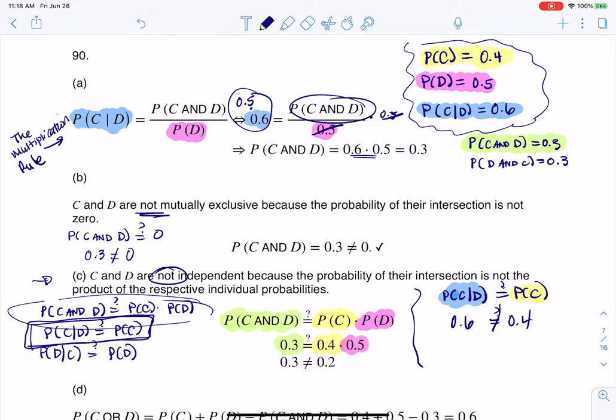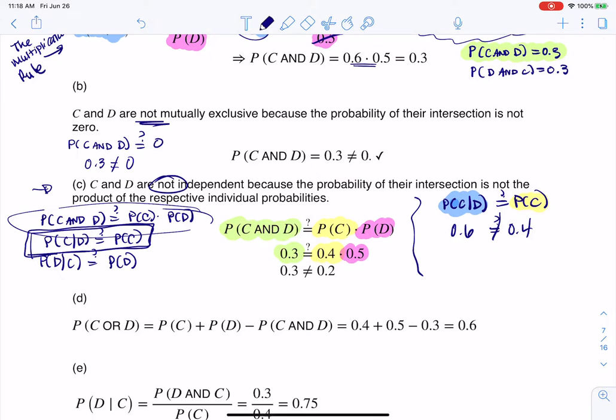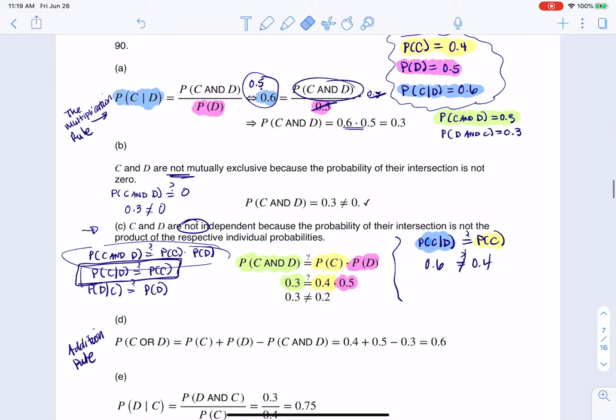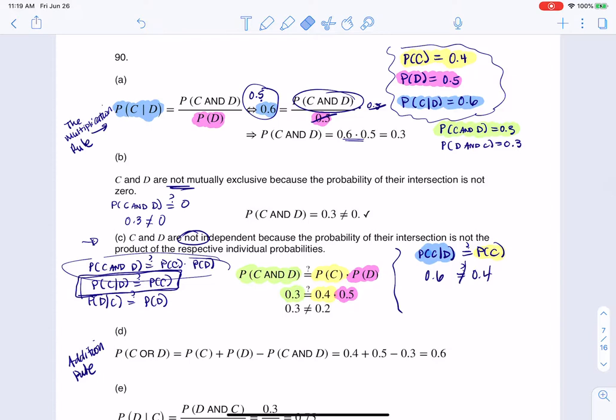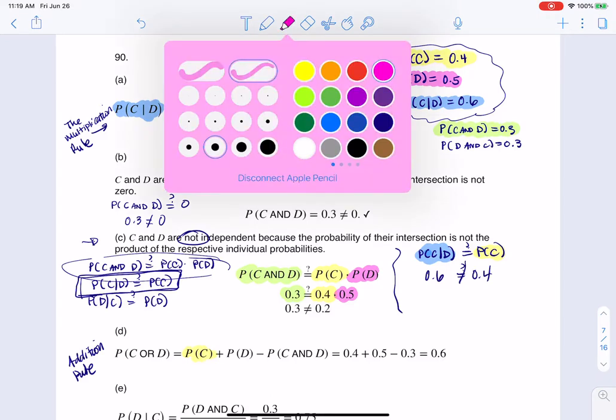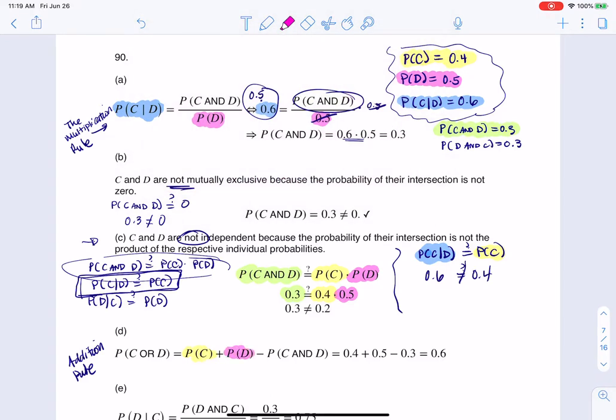So then part D asks you for the probability of C or D. Well, this is the addition rule. This is formula one. So let's go run formula one, which says we want to add their probabilities respectively, but subtract any overlap, anything that we might have counted twice. Well, let's figure this out. Let me scooch this. I'm going to squish this a bit just so we can keep the color coding going. So if I go through this, I have the probability of C, which we said was that yellow number. I have the probability of D, which we said was the pink number. And then we have C and D. We found that in part A. So I put all of that together and I find out C or D is 0.6.